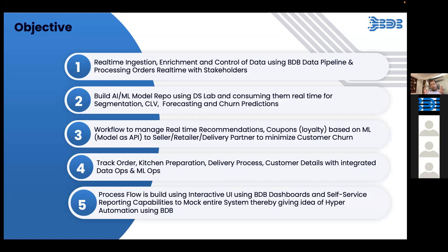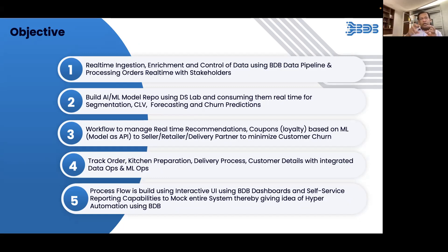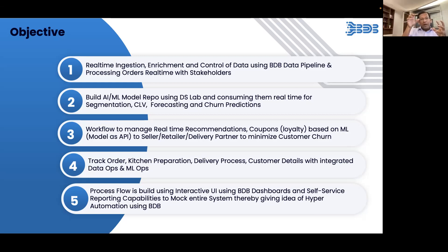In our online food ordering system, from the mobile app itself you will be able to order and track the order, control it by the order management form, deliver this information to the kitchen - the kitchen will be able to make the food and the delivery agent will be able to deliver it. While this is happening, there will be a series of algorithms used for forecasting, segmentation, and customer lifecycle value to predict whether the customer will churn or not, and on that basis recommendations will decide what type of coupons the loyalty management part will provide.